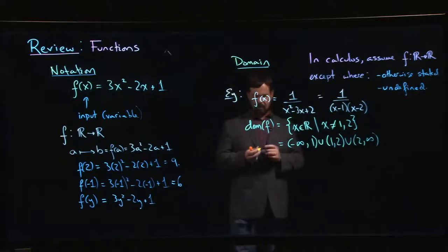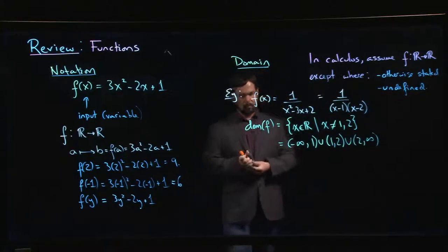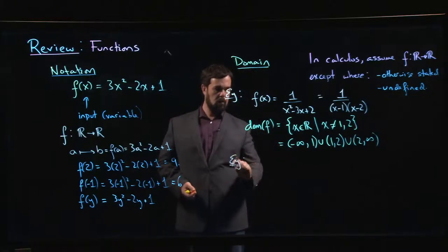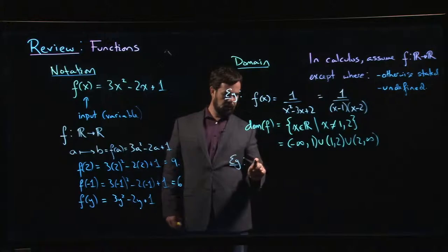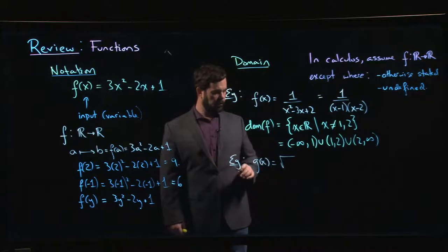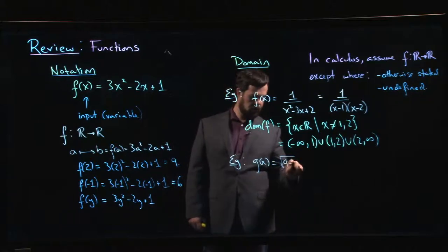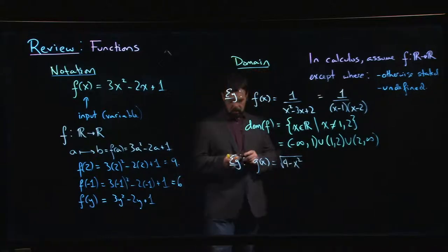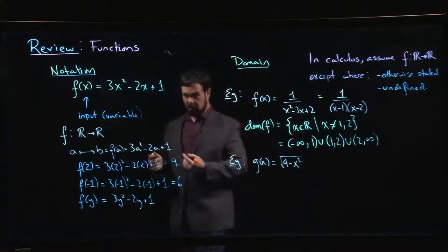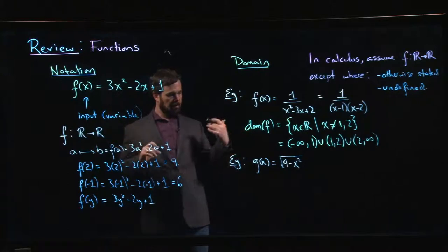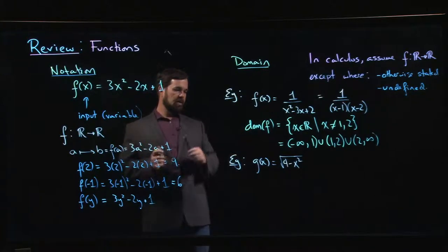Another example, we could do something like this. We could do, let's say, g of x is the square root of four minus x squared. Now again we're working over the real numbers when we're doing calculus, we're not looking at scenarios where we might allow for complex numbers. Imaginary numbers are not part of the equation here. We know that if you want to stick to real numbers you can't take the square root of a negative.